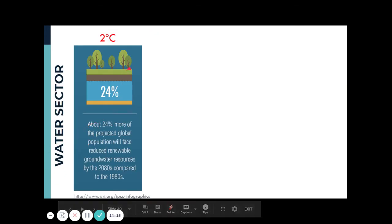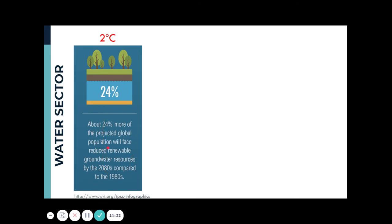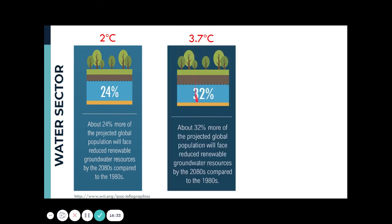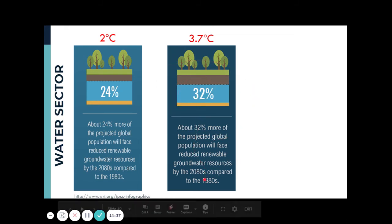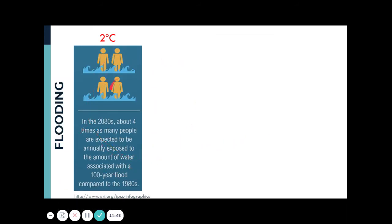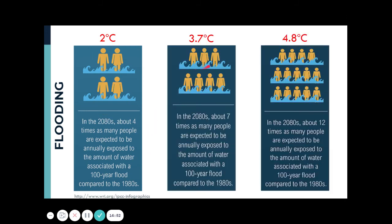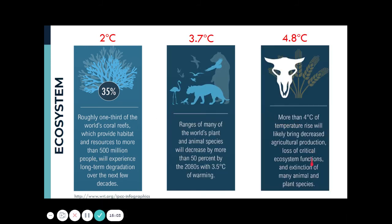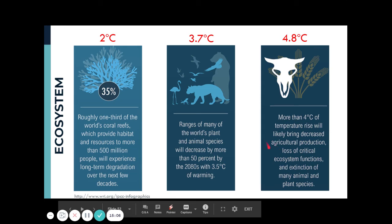For the water sector, with a two-degree increase in temperature, experts found that 24% more of the population will face reduced renewable groundwater. As the temperature increases even higher, more vulnerable populations will be affected by reduced renewable groundwater resources. In terms of flooding, there will also be an increase in exposure and vulnerability as global warming increases. For ecosystems, it might even cause extinction of some animal and plant species.